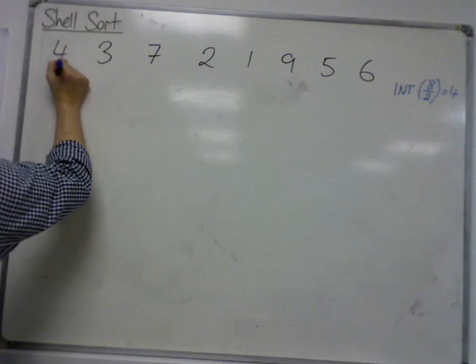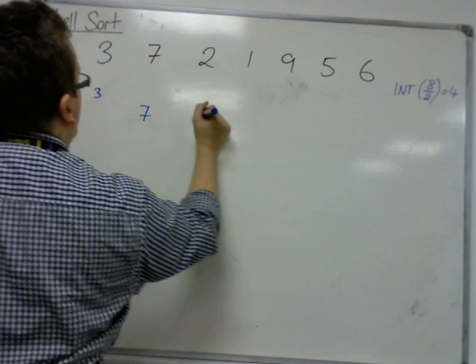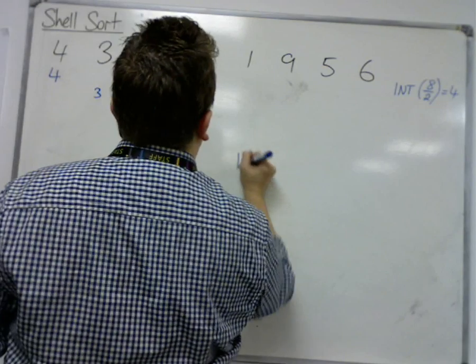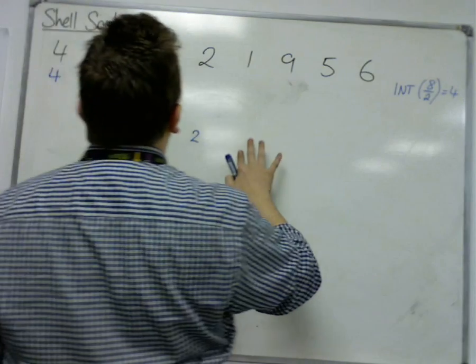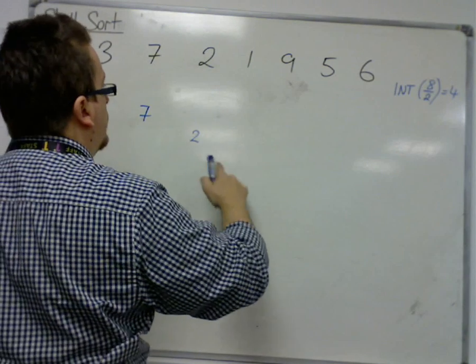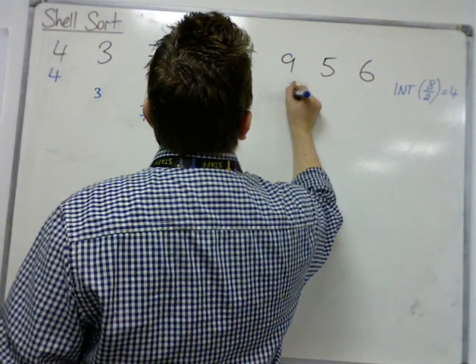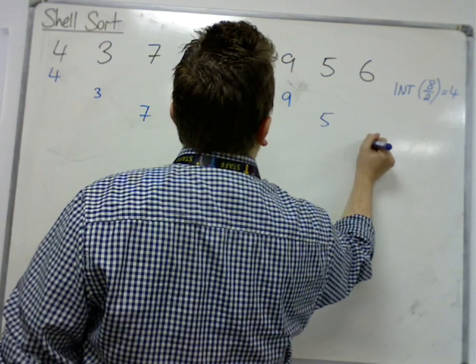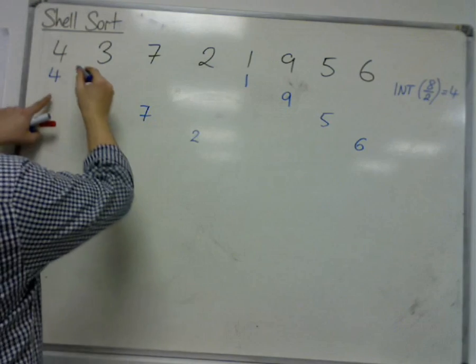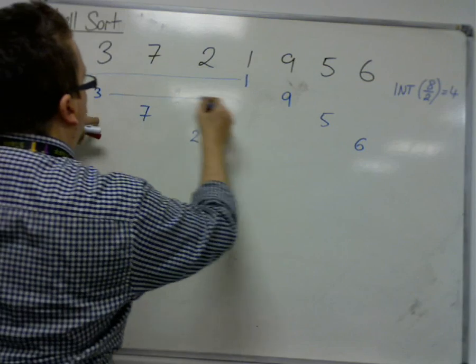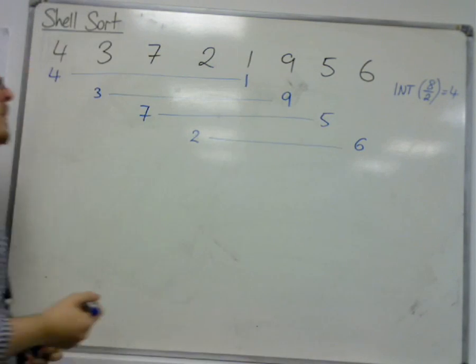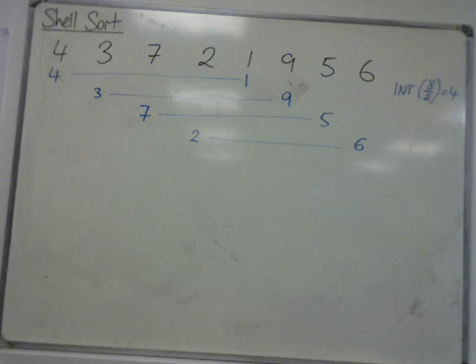So we have 4, 3, 7, 2, and then 1, 9, 5, 6. So I now have 1, 2, 3, 4 sublists.